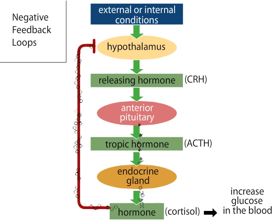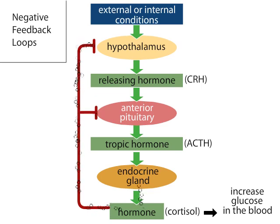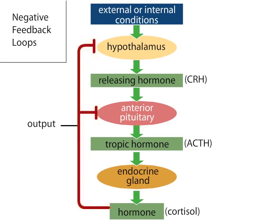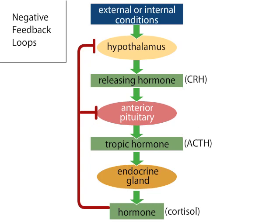Without CRH, the anterior pituitary does not release ACTH. In addition, cortisol also acts directly on the anterior pituitary to inhibit ACTH release. Without ACTH, the adrenal cortex stops releasing cortisol. This interaction is an example of a negative feedback loop, in which the output of the system — the hormones from the adrenal cortex — ultimately diminishes the input from the system — the hormones from the hypothalamus and anterior pituitary. This system turns on cortisol release, but then turns it off before cortisol levels get too high.